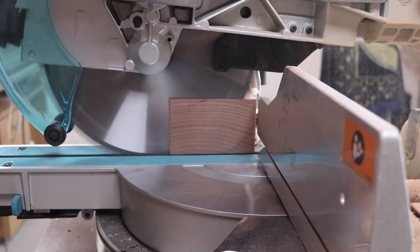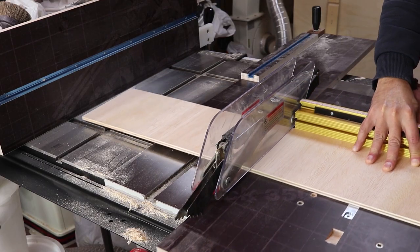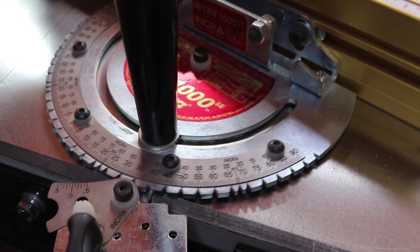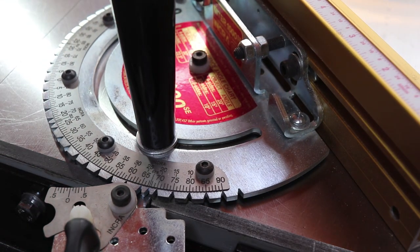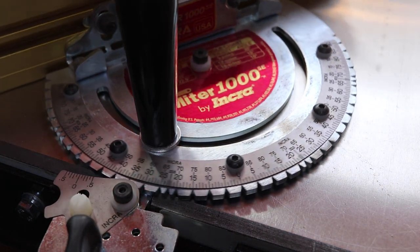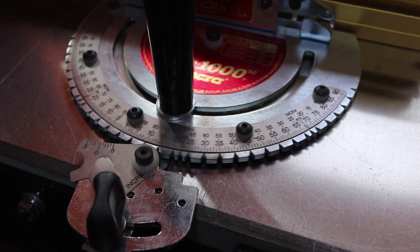Like the miter saw, the table saw is great for cutting miters accurately, but that depends on the miter gauge you have. Usually the aftermarket ones are better than the one that comes with the saw.